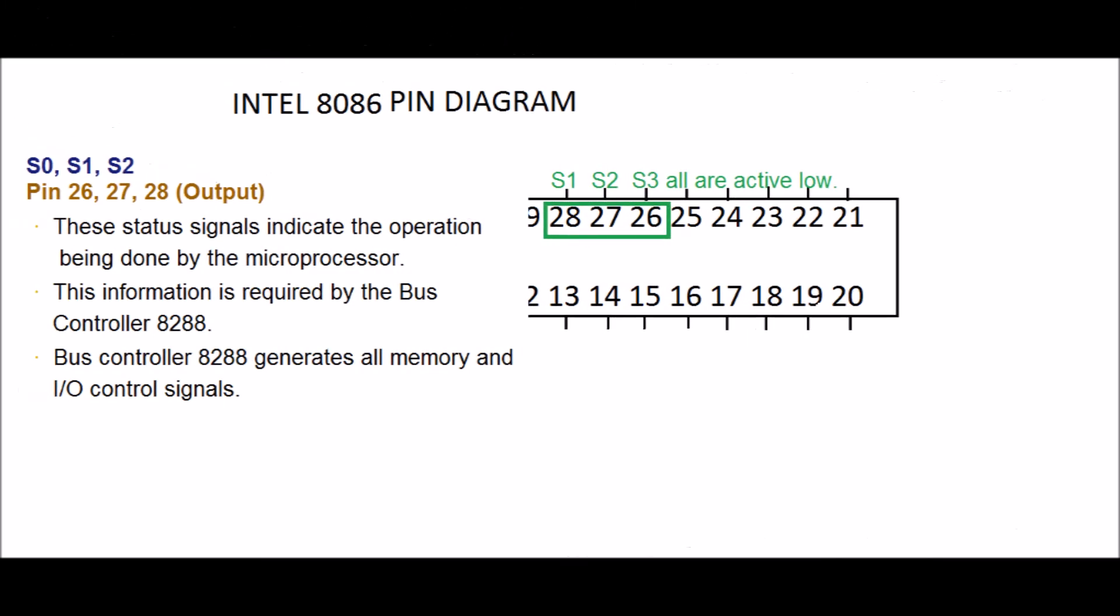S0, S1 and S2. PIN 26, 27 and 28, output. These status signals indicate the operation being done by the microprocessor. This information is required by the bus controller 8288. The Intel 8288 is a bus controller chip which is designed for Intel 8086-8087-8088-8089. Bus controller 8288 generates all memory and I/O control signals.